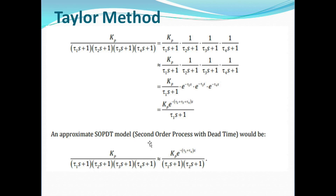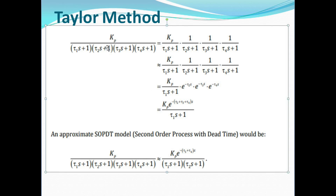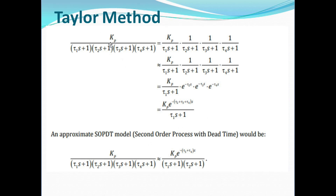Today we will see these two methods. First, we will look at Taylor's method. Suppose we have a transfer function of a comparatively higher order. The transfer function is Kp divided by (τ₁s+1)(τ₂s+1)(τ₃s+1)(τ₄s+1), which is an example of a typical fourth order system. It might have two, three, or four time constants. As the time constants increase, the power of s in the differential equation increases and the order of the system also increases.